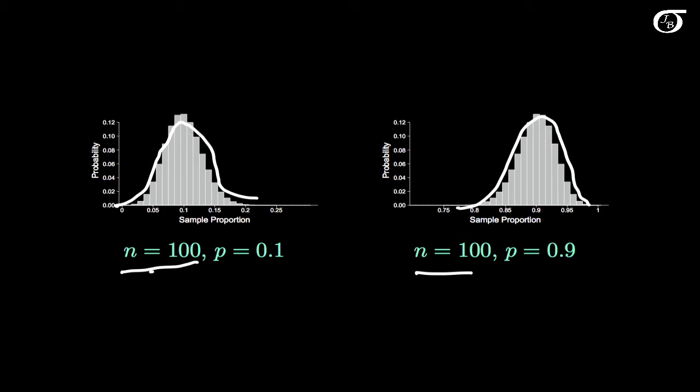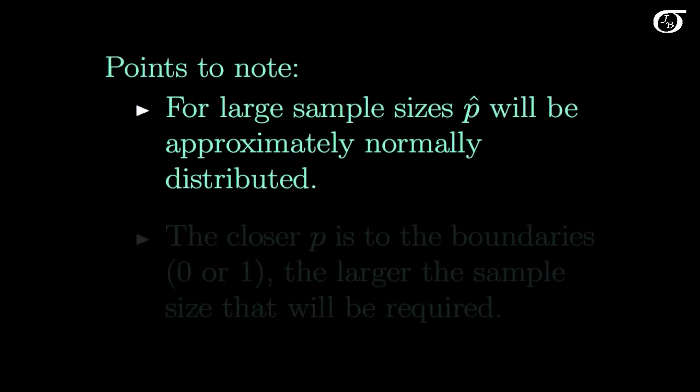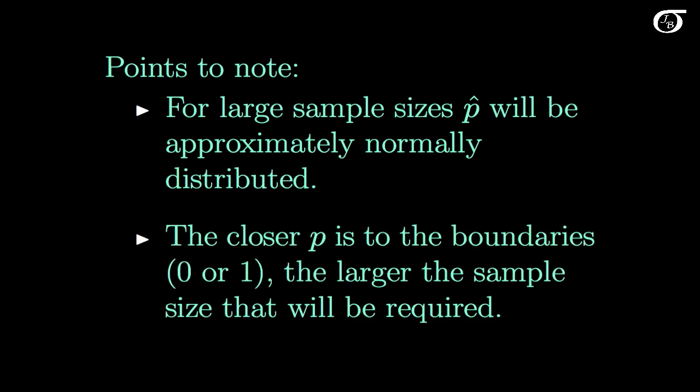There are some guidelines for when we have approximate normality, though different sources state this in different ways, so consult your own textbook. The major points: for large sample sizes p-hat will be approximately normally distributed, and the closer the true value of p is to the boundaries of 0 or 1, the larger the sample size required to achieve that approximate normality.